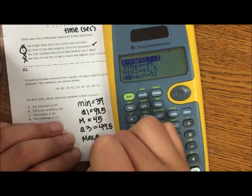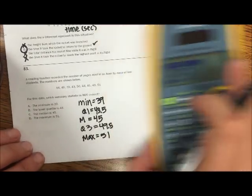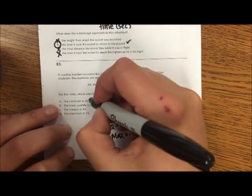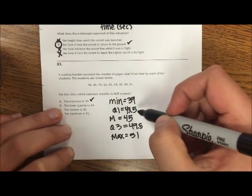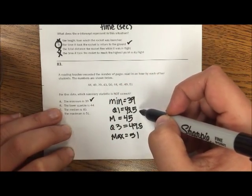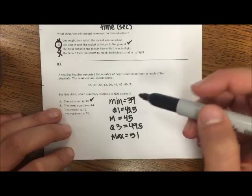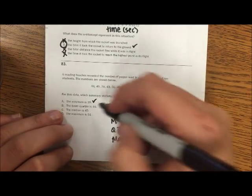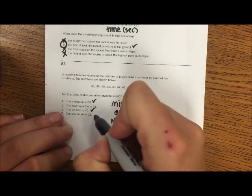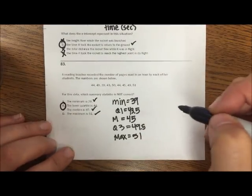So let's figure out which one's not true. The minimum is 39, that's true. The lower quartile is 44? Now I got 43.5, but let's keep going. The median is 45, that's true. And the max is 51, that's true. So B would be your option.